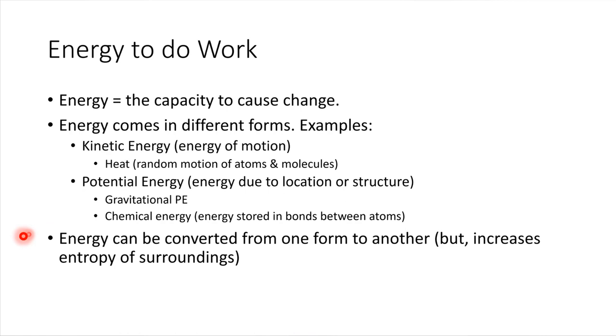Any time that energy does get converted from one form to another, something happens. We say that the entropy of the surroundings increases. So when we do energy conversions, we increase entropy. What is entropy? Entropy is basically a measure of how disordered things are. So how messy things are.